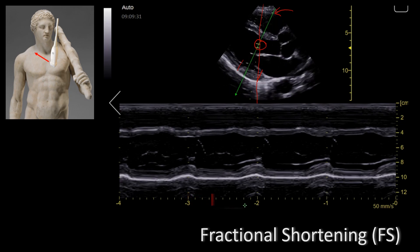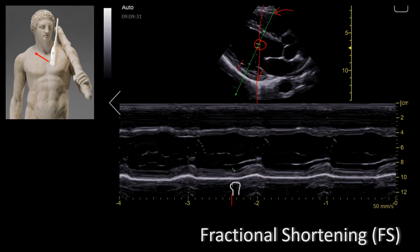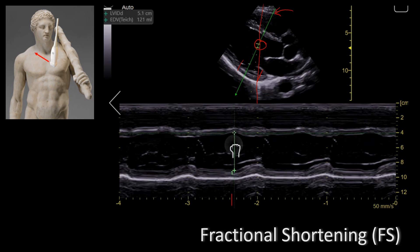After you get a good M-mode tracing you want to start making some measurements. You want to measure the endocardium from the end of diastole to the end of systole. What you're basically measuring is the percentage decrease of the left ventricular end-diastolic diameter that occurs by the end of systole.